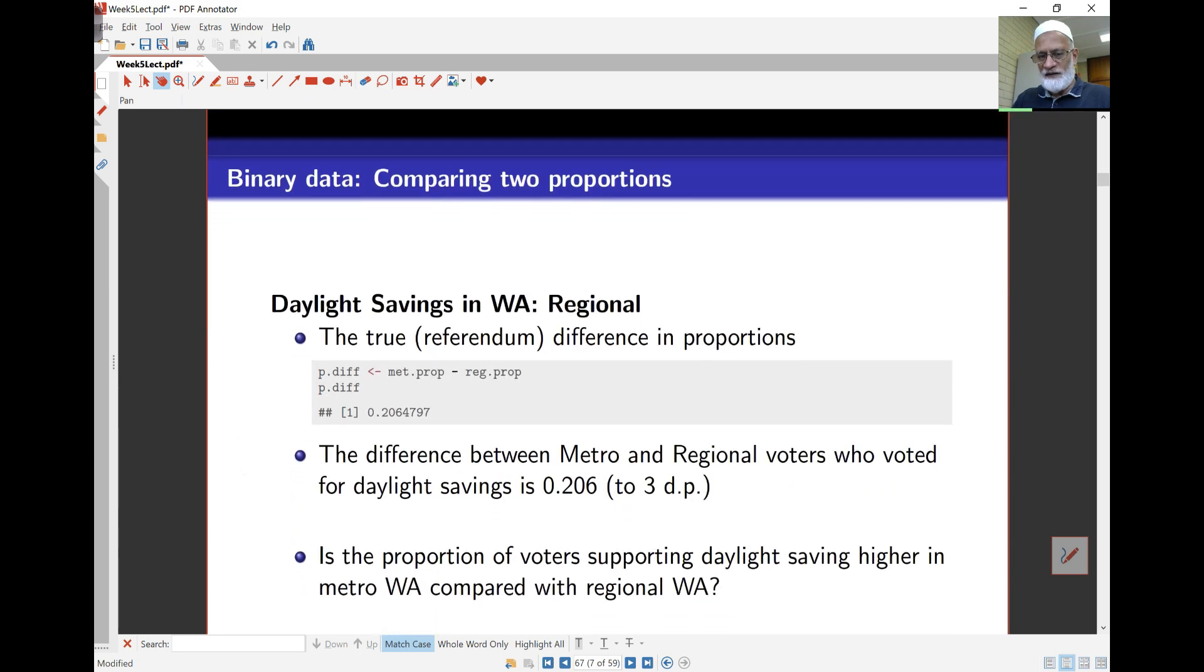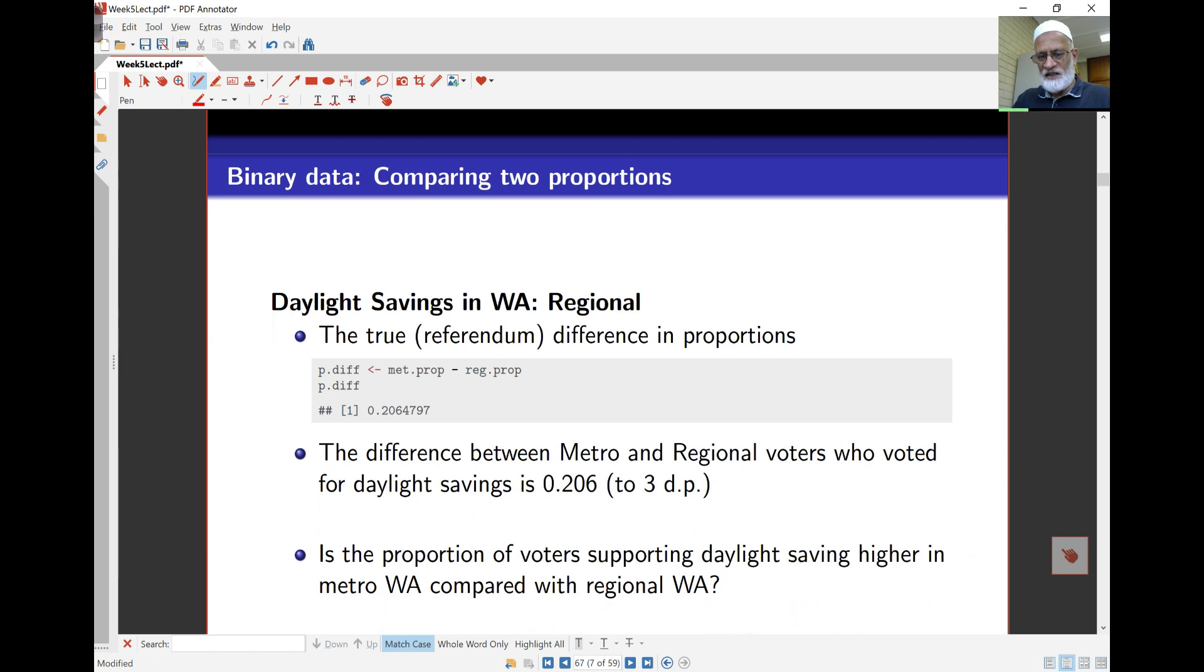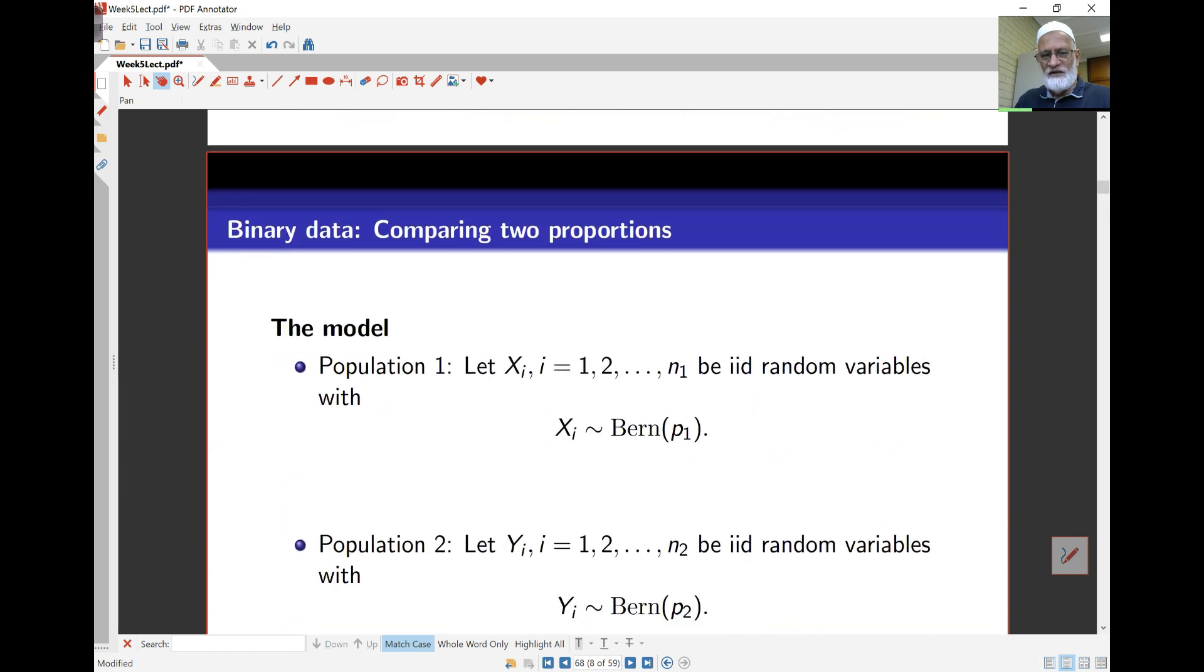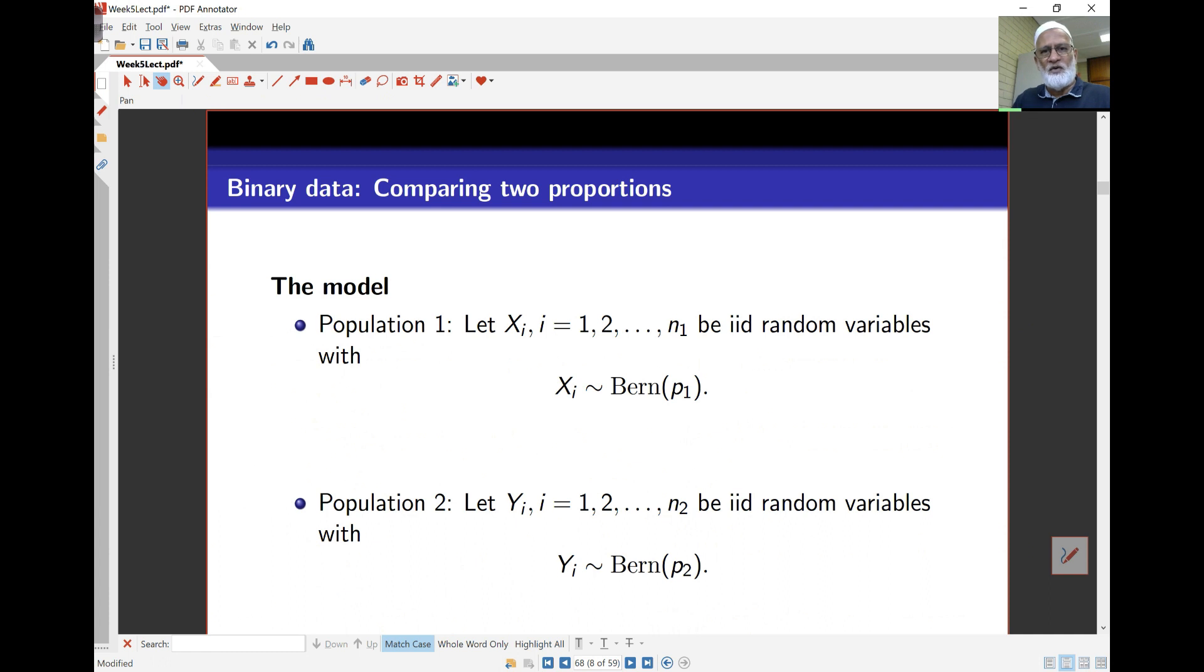We want to compare two proportions. The difference between the metro voters and the regional voters comes to about 20 percent, 0.206. If I take a sample of data and compare proportion of the yes votes in metro versus the proportion in regional Australia, what am I expected to see? How do I compare those two proportions? We'll do this in lectures by looking at the calculations by hand but later in the lab this week we'll take a look at how we can do this more simply in R as well.